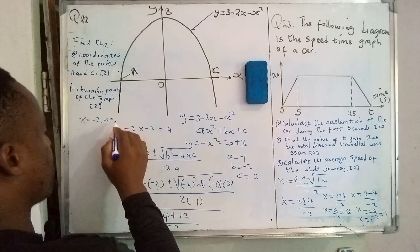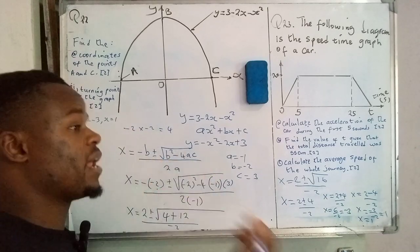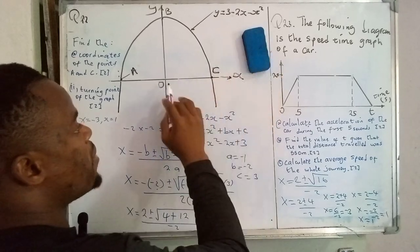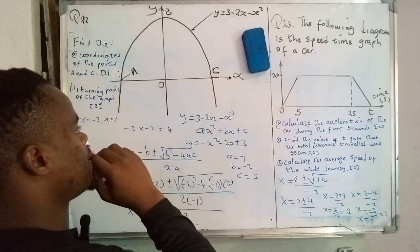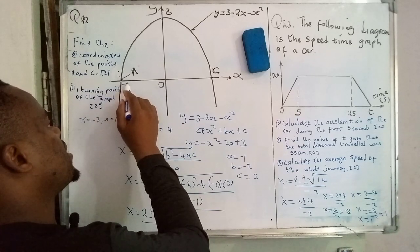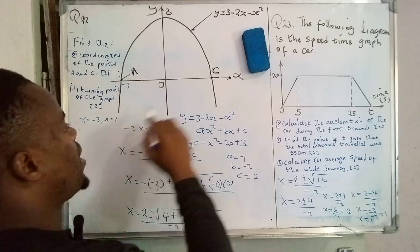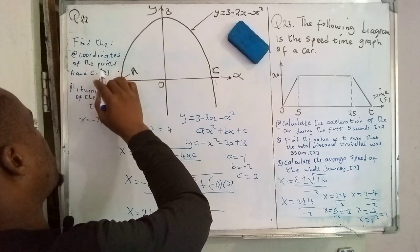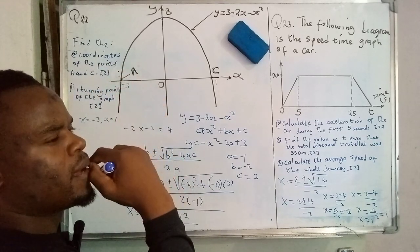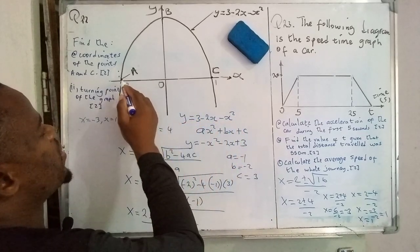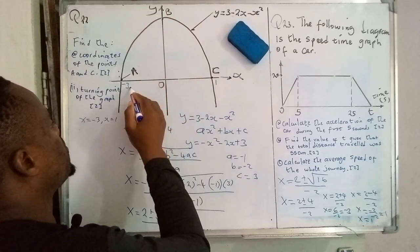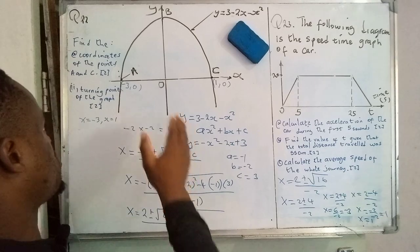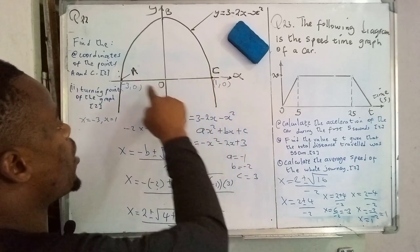Since zero separates the two sets of integers, with positive integers on the right and negative on the left, point A falls on −3 and point C falls on 1. Since the x-intercepts lie on the x-axis, the y-coordinates are zero. So the coordinates are A(−3, 0) and C(1, 0). We have found the coordinates of A and C.